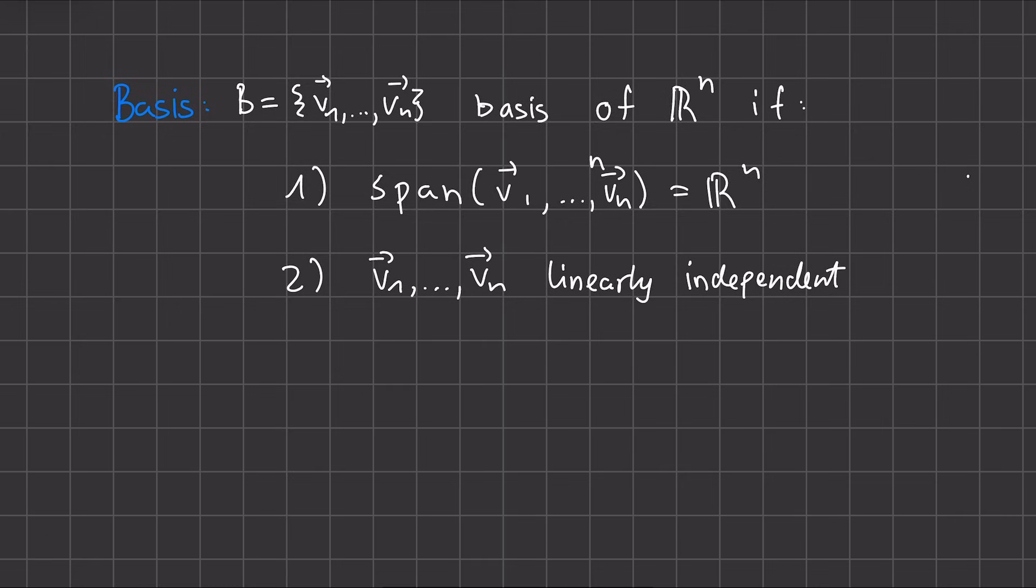A basis is the smallest set of independent directions that reach the whole space. If we are talking about the space R^n, we look for the smallest set of vectors v, so that their span is R^n, and that all of these vectors are linearly independent.